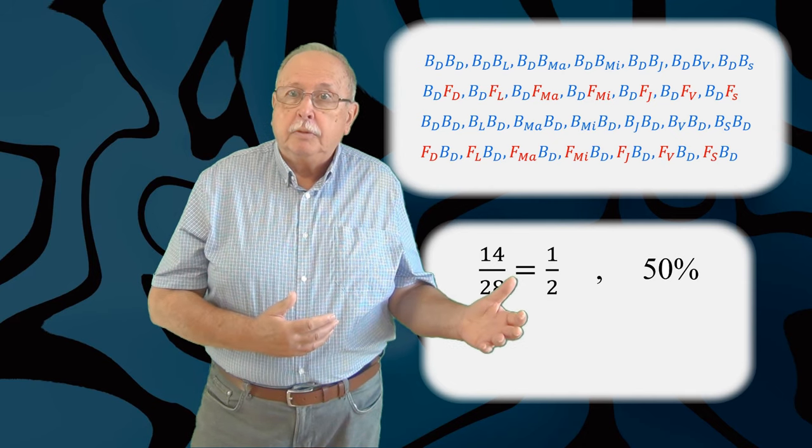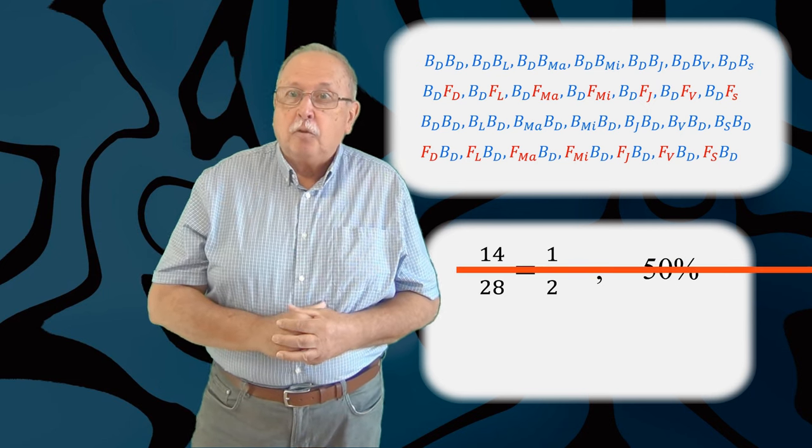La prima vedere, pare că avem în total 28 de combinații posibile, dintre care 14 în care amândoi copiii sunt băieți. Ceea ce ar însemna că probabilitatea ar fi de 14 pe 28, adică 1 pe 2, adică 50 la 100. Dar nu este așa, deoarece am numărat de două ori o combinație. Combinațiile marcate acum în desen sunt una și aceeași combinație. Așa că avem doar 13 cazuri în care amândoi sunt băieți, dintr-un total de 27 de cazuri posibile, așa că probabilitatea este de aproximativ 48 la 100.